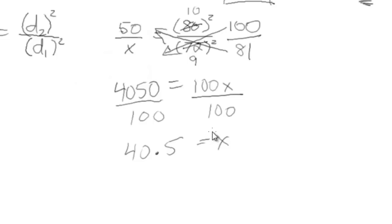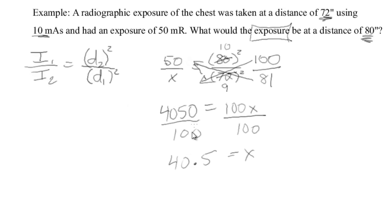And don't forget this is the most important part. A lot of people do this. They forget to write the unit of measurement here. The increment that you're working with. We're looking at milliroentgen. So let's make sure to write 40.5 milliroentgen. That is your answer. That's the new exposure rate at the new distance of 80 inches.